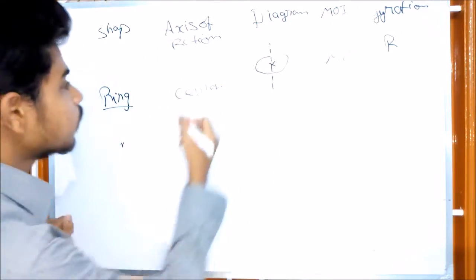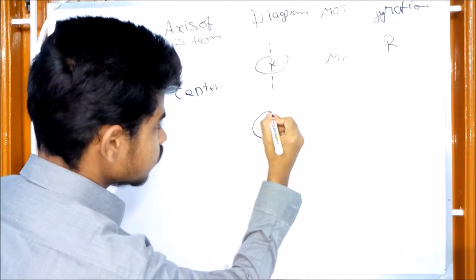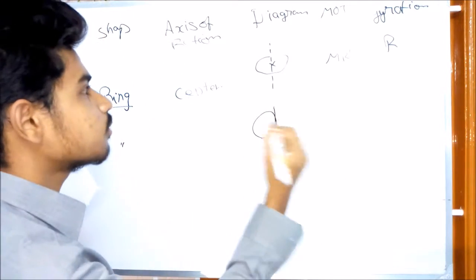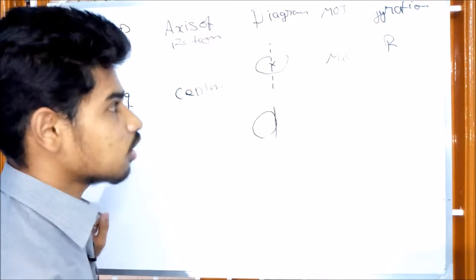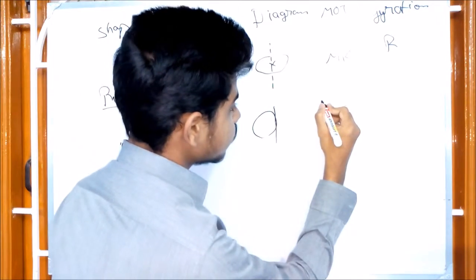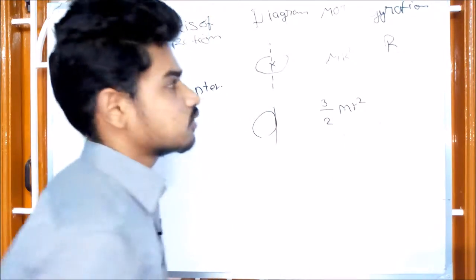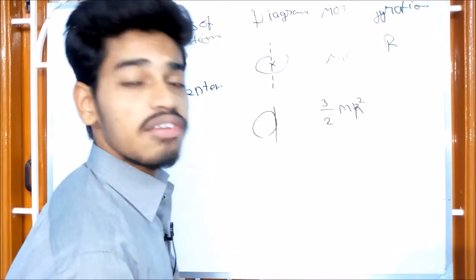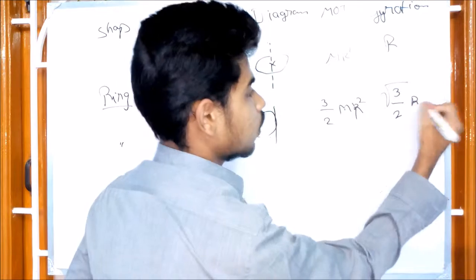If you look at the ring, this is the ring shape. If you look at the side of the ring, this is the side of the base. Now, what is the right? This is 3 by 2 m r square. The gyration value is root of 3 by 2 r.